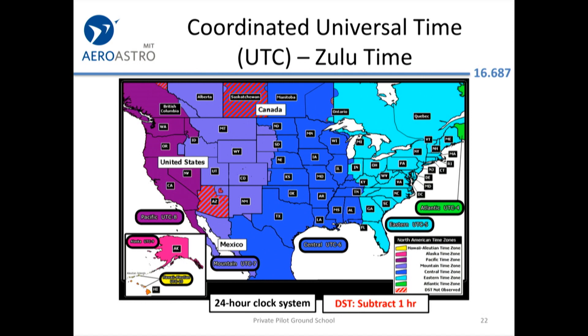Zulu time is the same as UTC time. We're currently in Eastern Standard Time, which is five hours different from Zulu time. So you subtract five from the Zulu time to get Eastern Standard Time. When it turns into Daylight Time in the March timeframe, it becomes minus four. It's good to know this because a lot of weather data and information is provided in Zulu time, and you may need to convert to your local time zone.